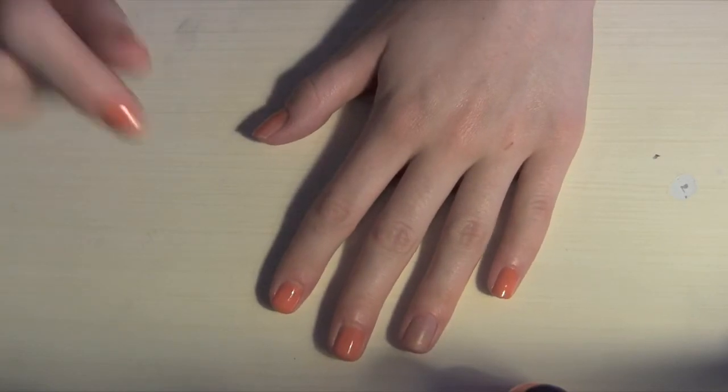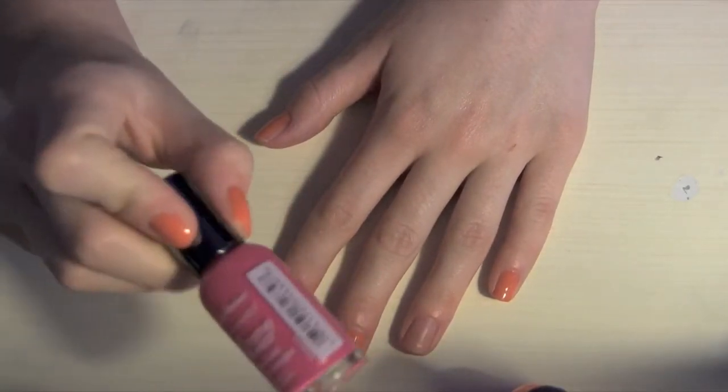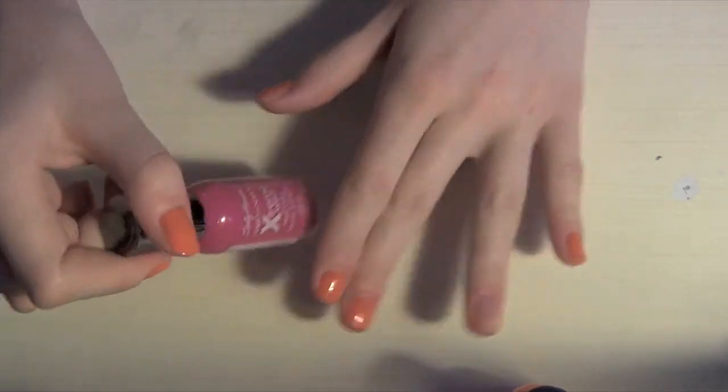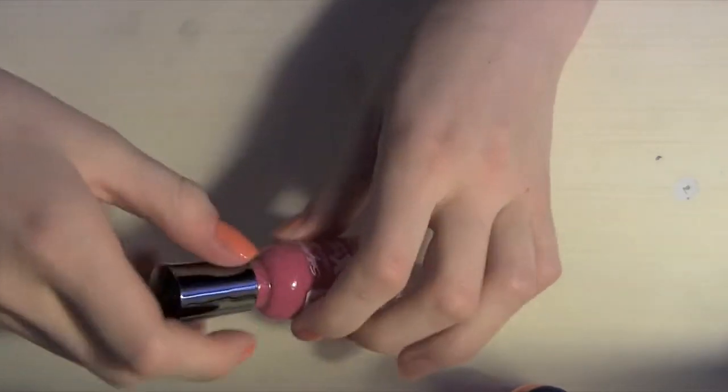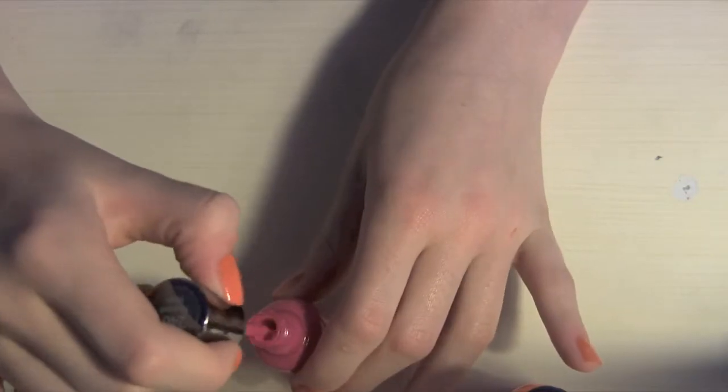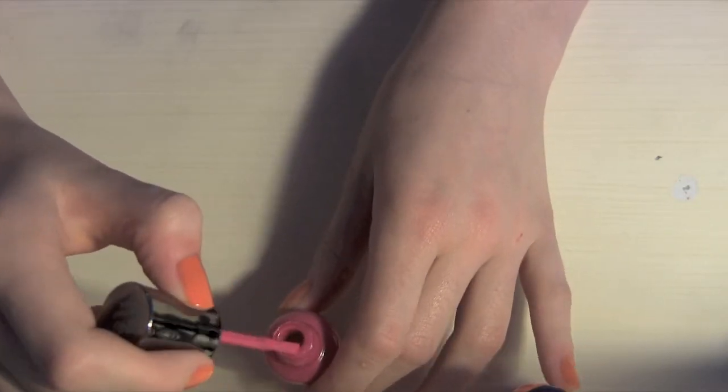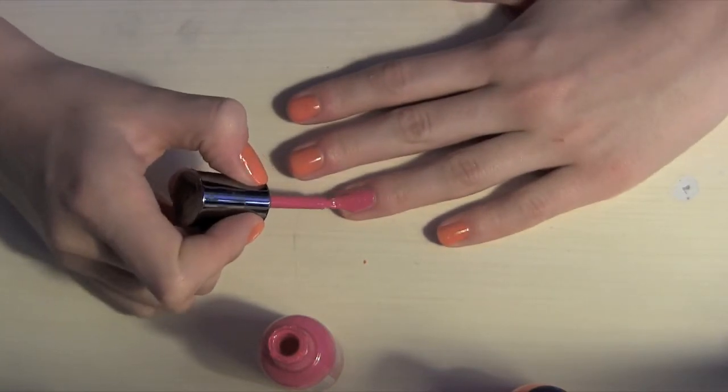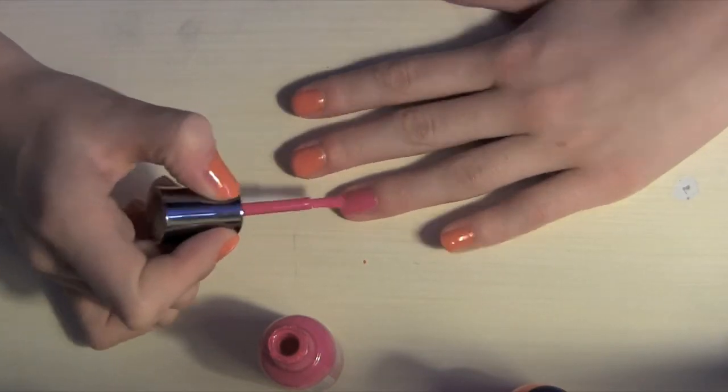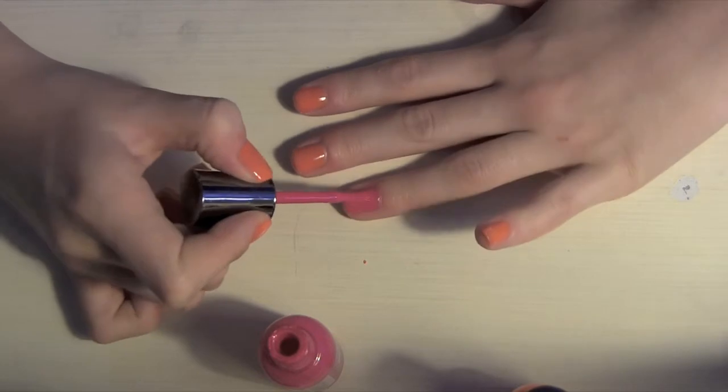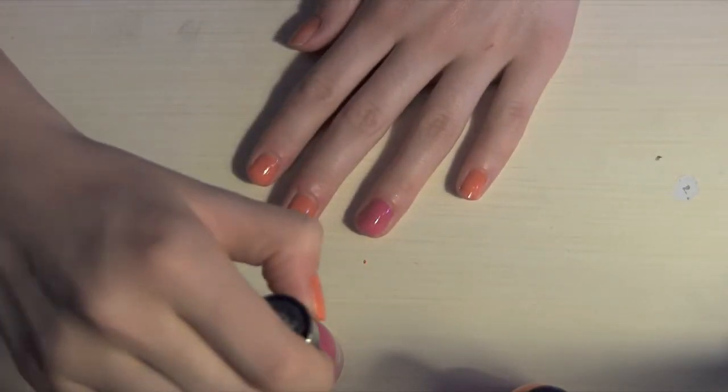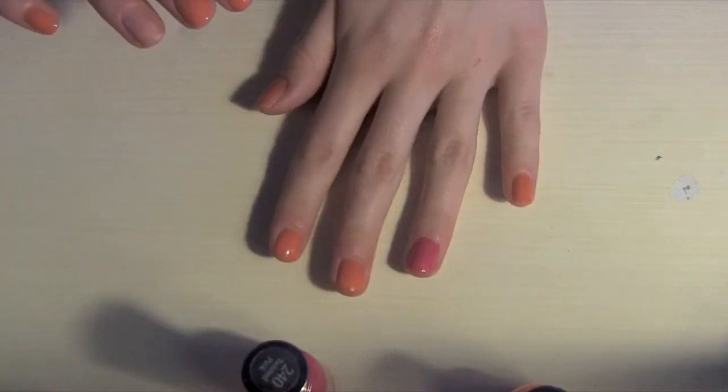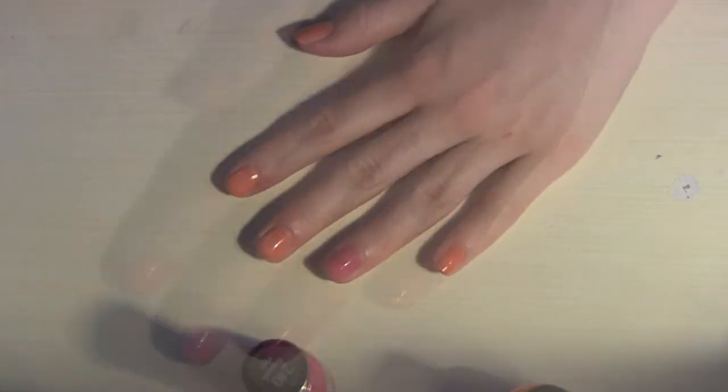Once you have your main color put down, you want to paint your accent nail. I'm going to be using the pink for my accent nail. Once you have your nails completely painted, you want to wait a good amount of time, especially for your accent nail since we're going to be doing more to it. Make sure that they are 100% dry. Just be really patient - go do something, maybe get on the computer, listen to some music, whatever you want. But make sure your nails are 100% dry before you move on to the next step.